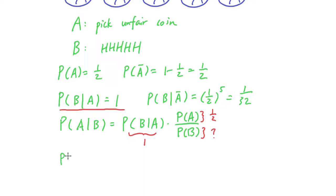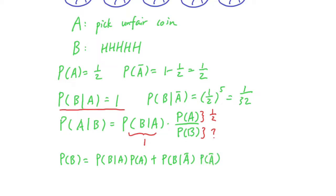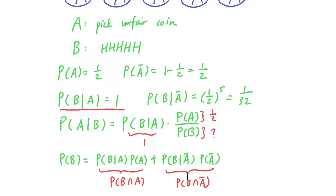P(B) — we can apply the law of total probability: P(B|A) times P(A) plus P(B|A-bar) times P(A-bar). This covers P(B and A) plus P(B and not A), and if you add them together that will be P(B). Substituting everything: P(B|A) is 1, P(A) is one half, P(B|A-bar) is 1 over 32, and P(A-bar) is one half. The answer is 33 over 64.